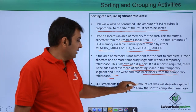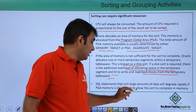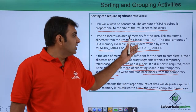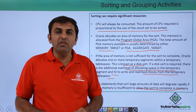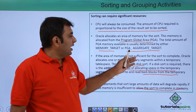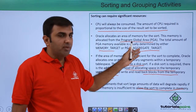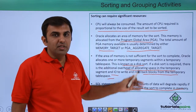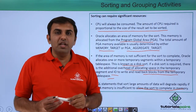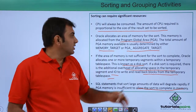SQL statements that sort large amounts of data will degrade rapidly if the PGA memory is insufficient to allow the sort to complete in memory. Whenever PGA is used insufficiently for sorting, it becomes an overhead on your database. The important thing is that your PGA_AGGREGATE_TARGET should be properly sized — enough for the sorting operations, depending on your transactions. You need to define the size based on how many sorting operations are in your database from the applications, check it out, and then decide the size.